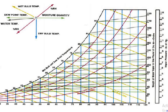Relative humidity is shown by the red curves, in percentage. This red curve is 20%, and this one is 40%. The point falls between them, close to 40% relative humidity.